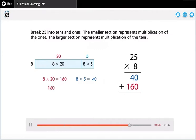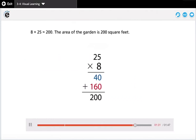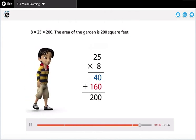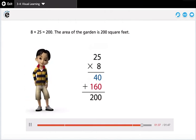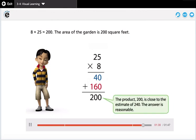160 plus 40 equals 200. 8 times 25 equals 200. The area of the garden is 200 square feet. The product 200 is close to the estimate of 240. The answer is reasonable.